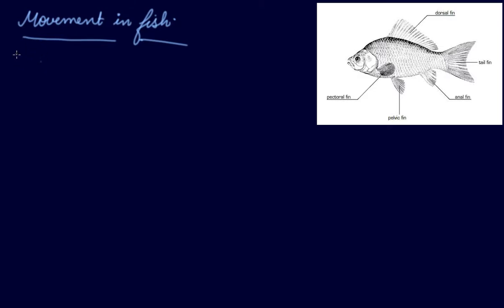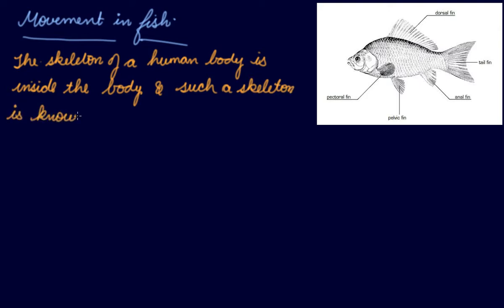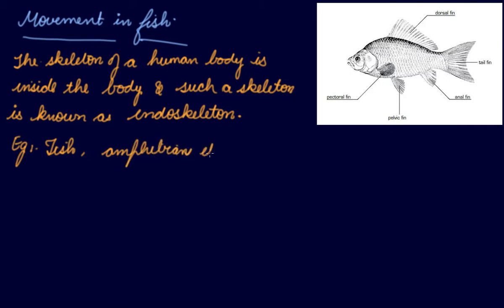In this video we will be studying about how there is movement in the fish. The skeleton of a human body is inside the body, and such a skeleton is known as an endoskeleton. For example, fish and amphibians are endoskeleton animals — they all have backbones and are known as vertebrates.